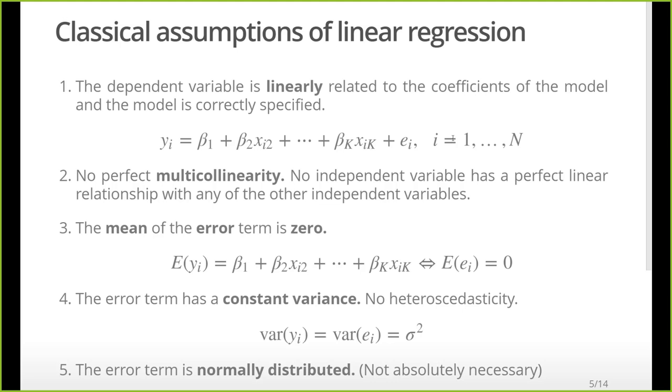Here's the classical assumptions. Number one: the dependent variable is linearly related to the coefficients of the model and the independent variables. We can come up with a linear combination of the independent variables that correctly describes the relationship. If there isn't a linear relationship, we need to either not use a linear model or linearize the relationship. This is why in economics we often use log transformations to make exponential growth look more linear.